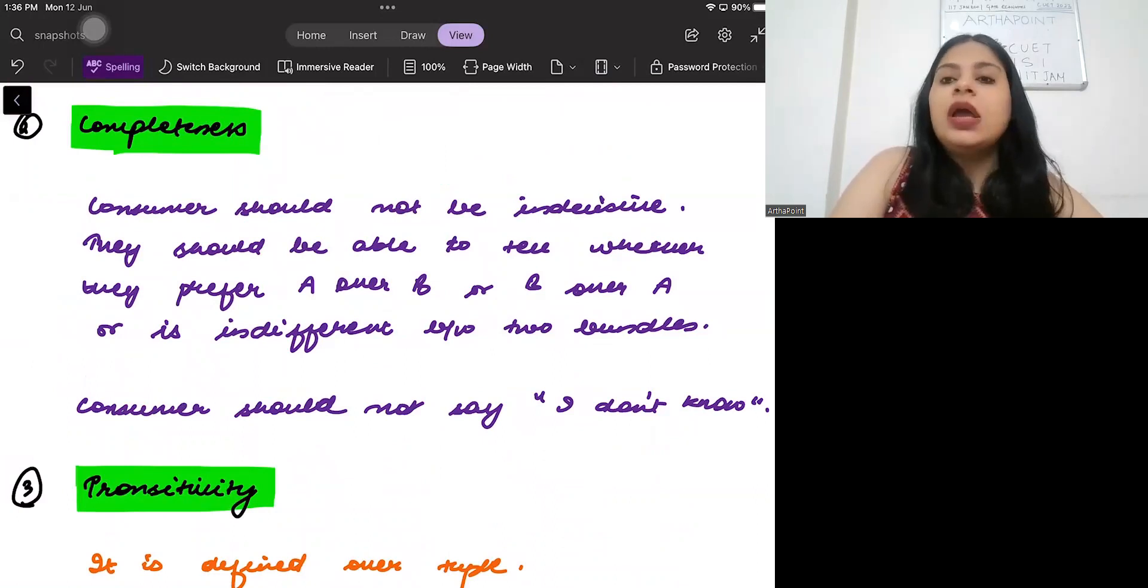Let me give you an example. Suppose I give you 50 rupees and I ask you, do you want to have a McDonald's burger or noodles? You will tell me either I prefer burger over noodles, or I prefer noodles over burger, or I am indifferent between the two. I am okay with eating any of the two. But you cannot say I don't know, you cannot say which is better. That should not happen with a rational consumer. A rational consumer should be able to make choices. He should be able to decide what he wants. That is completeness.